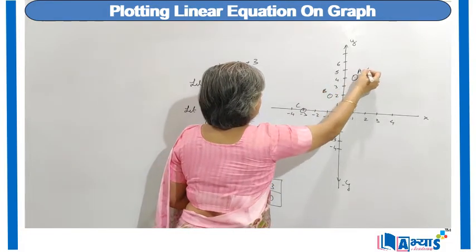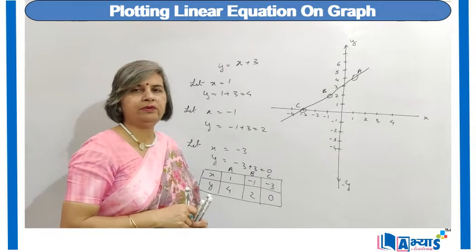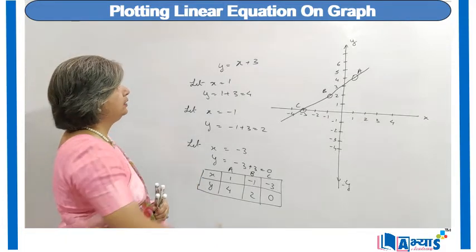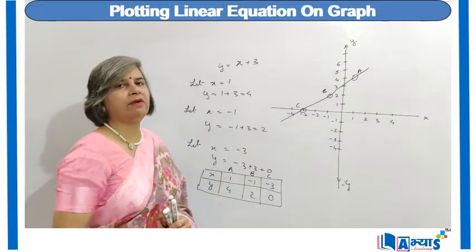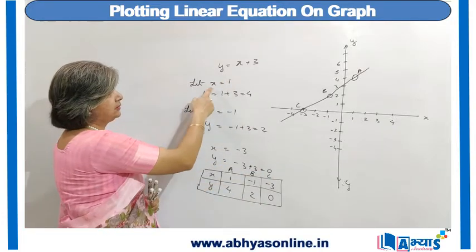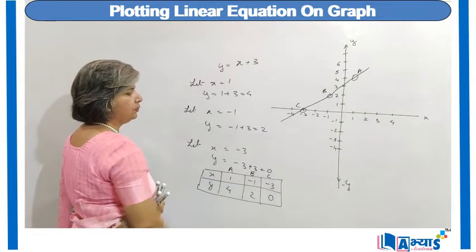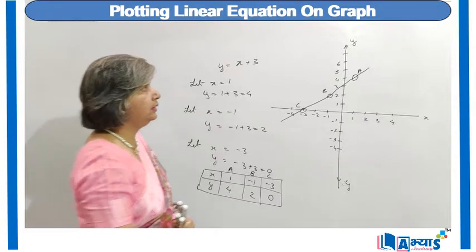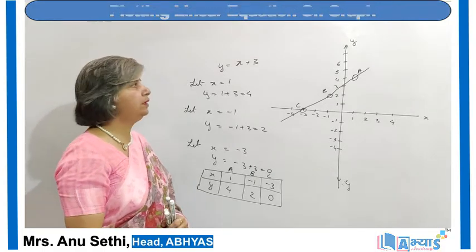When we join these points, it will be a straight line. So we see that this is how we can represent a polynomial of degree 1 on a graph — it always gives a straight line. To summarize: we assigned the polynomial to a variable y, found y-values for x equal to 1, minus 1, and minus 3, made a table, marked the points A, B, and C on the graph, and found that joining them gives a straight line.